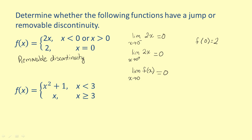Next, we have another piecewise function. Again, we'll start by finding the left and right hand limits. As x approaches 3 from the left, x is less than 3, so we find the limit of x squared plus 1 as x approaches 3. Using substitution, we find that the limit is equal to 10.